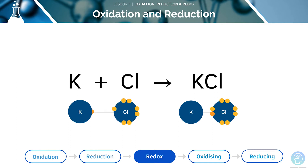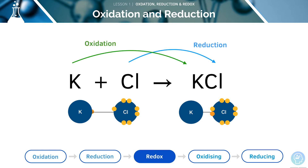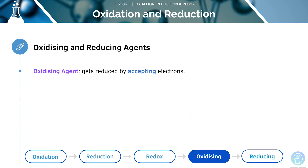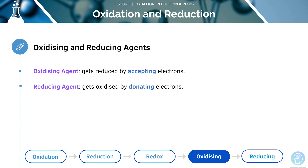Here we can see the reaction between potassium and chlorine — this is a redox reaction. The potassium has undergone oxidation, whilst the chlorine has undergone reduction. An oxidising agent gets reduced by accepting electrons, and a reducing agent will get oxidised as it gives up electrons.